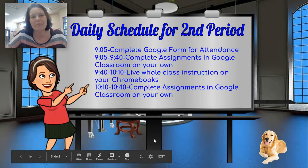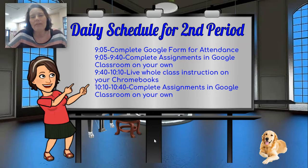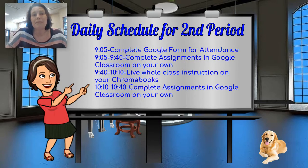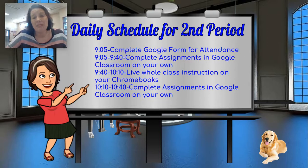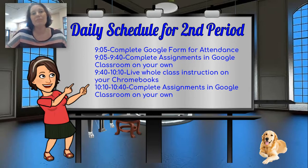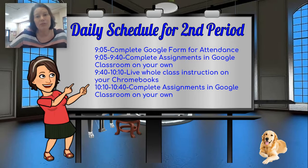Here is our schedule for second period. At 9:05, you need to complete the Google form for attendance. You will have 10 minutes to complete it. By 9:15, it should be done so that I can give you full credit for that assignment. Between 9:15 and 9:40, you need to complete it. If you don't complete it by 9:40, then you will be marked absent for second period, even if you show up in the Google Classroom live instruction.